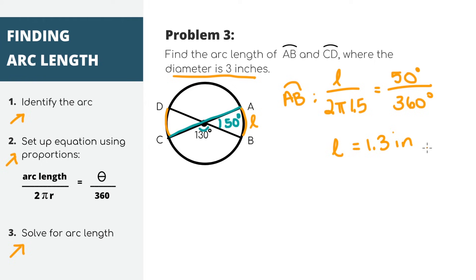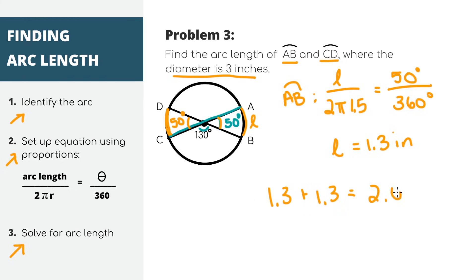However, we're not done yet because the question asked us to find the arc length of AB and CD. But lucky for us, these arc lengths are actually the same, because if you look at these two angles, they're directly across from each other, which means they're vertical angles. Vertical angles always have the same angle measures, so that will also mean that their arc lengths are the same too. I'm just going to double what we got for AB, and the arc lengths of the two arcs added together is 2.6 inches.